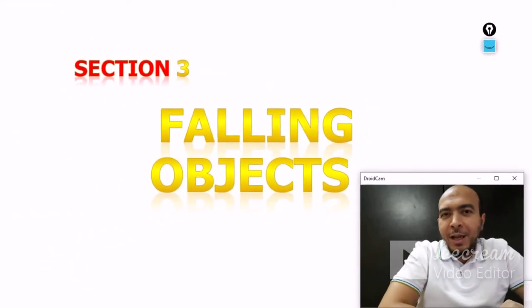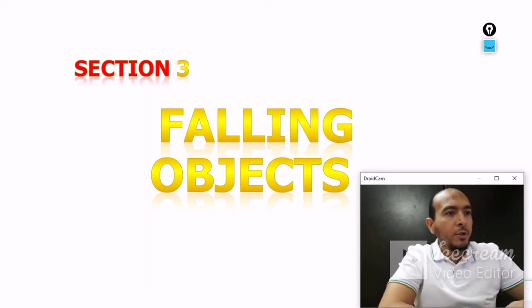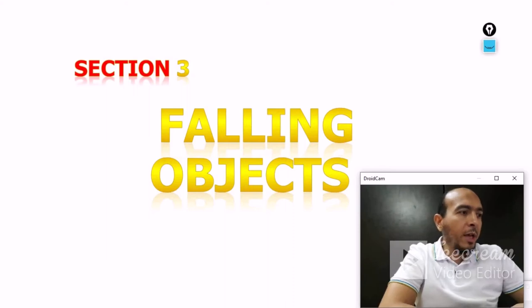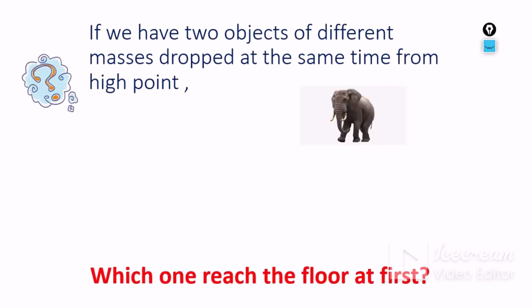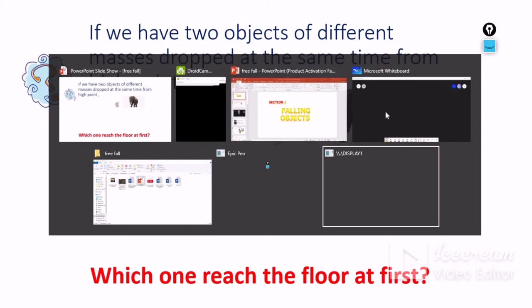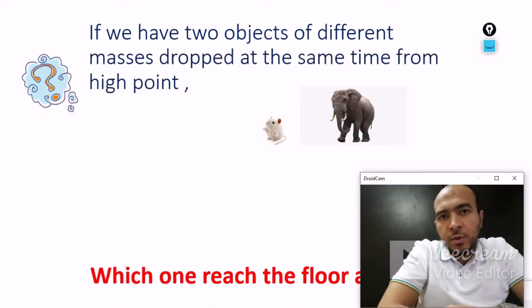Assalamu alaikum, welcome everyone. Today I will introduce falling objects, or free fall. I will explain acceleration and things related to falling objects. First, we start with this question: if we have two objects of different masses — one very huge like an elephant, and another like a mouse — which one reaches the ground first? What do you think?